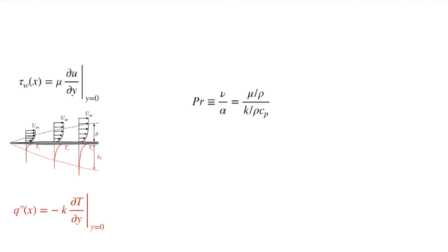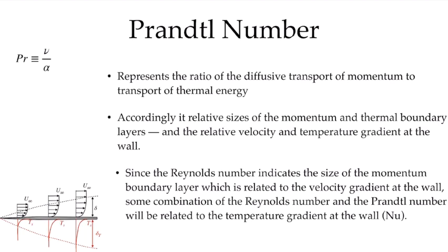The kinematic viscosity nu is simply mu over rho, the dynamic viscosity over the density. And the thermal diffusivity is the conductivity of the fluid over the density of the fluid and the heat capacity of the fluid. This ratio gives us the Prandtl number, and the Prandtl number represents the ratio of the diffusive transport of momentum relative to the transport of thermal energy.